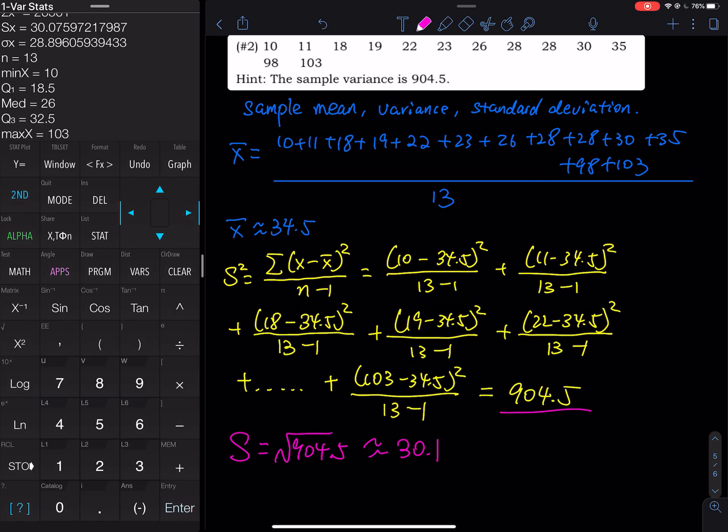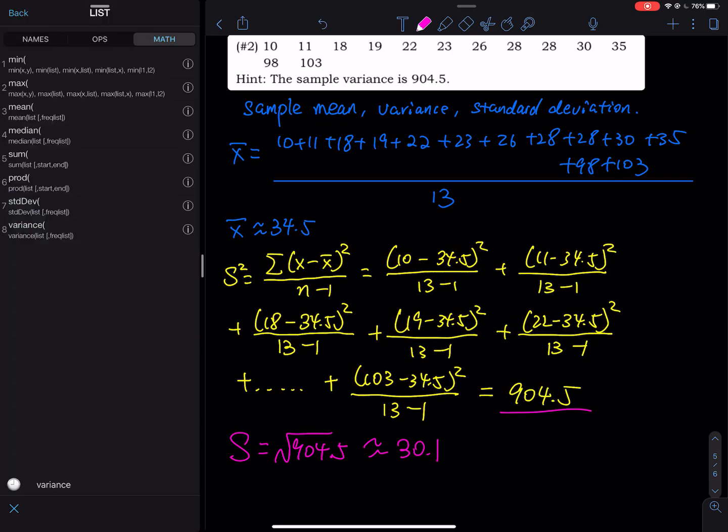To get the variance, you just hit clear. On your screen, hit clear, clear everything. You have to go to second stat, and then you go to math. Hit the right arrow twice to go to math. And then you pick the last one, variance.